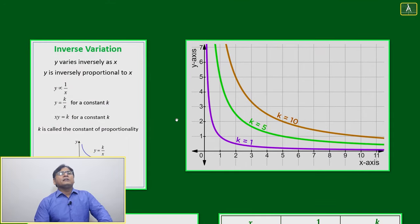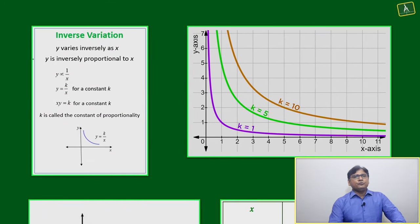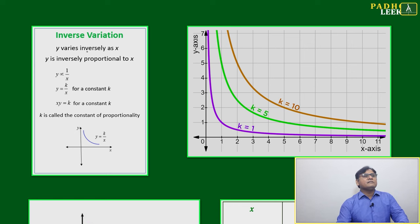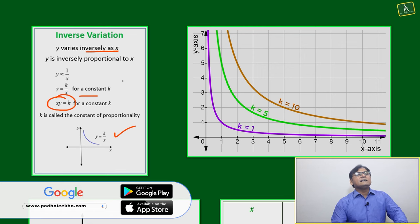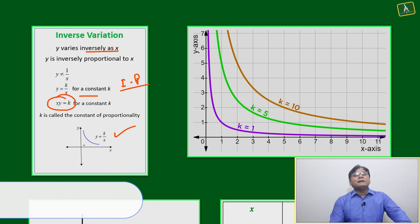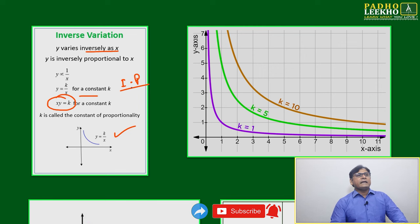Let's go through a few examples like inverse variation: Y varies inversely as X. If exactly XY equals K, then only we can say it is inversely proportional. If it is in some other format, we will call it an inverse relationship, not proportionality.